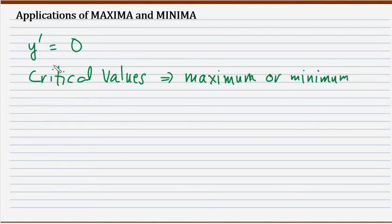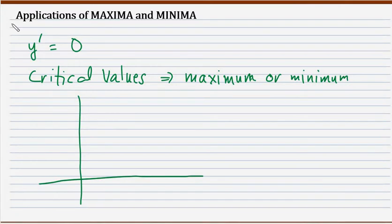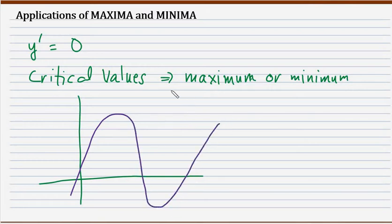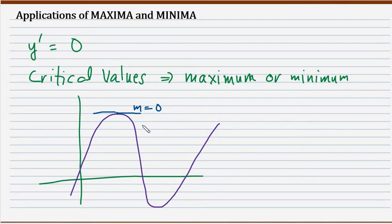We have already established that the first derivative is the slope. To prove the point, let's say we have a graph — a curve — and at the point where the graph reaches a certain maximum value, the slope at that point is equal to zero. And we know that the slope is also the first derivative.